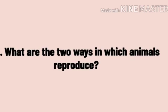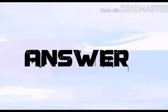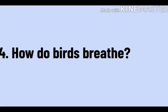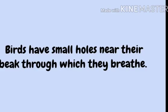Question number 3: What are the two ways in which animals reproduce? Answer: Animals reproduce by laying eggs or giving birth to babies. Question number 4: How do birds breathe? Answer: Birds have small holes near their beak through which they breathe.